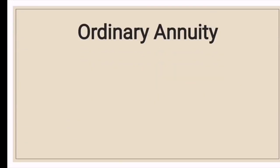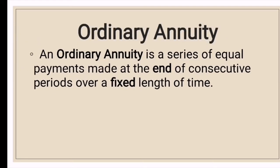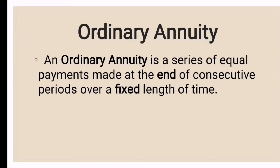An ordinary annuity is a series of equal payments made at the end of consecutive periods over a fixed length of time. Take note of the word 'end' and 'fixed length of time.' While the payments in an ordinary annuity can be made as frequently as every week, in practice they are generally made monthly, quarterly, semi-annually, or annually.